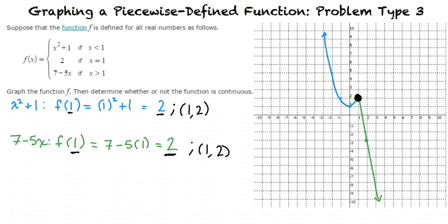How do we determine whether the graph is continuous? A graph is continuous if it is a single unbroken curve that can be drawn without lifting the pen. If there are any jumps, holes, or vertical asymptotes within the domain, then the graph is discontinuous.